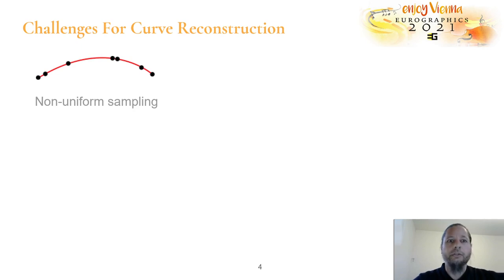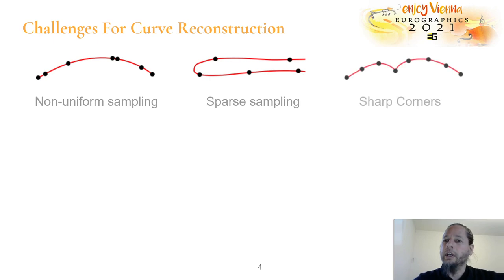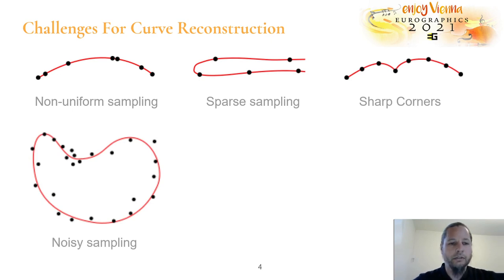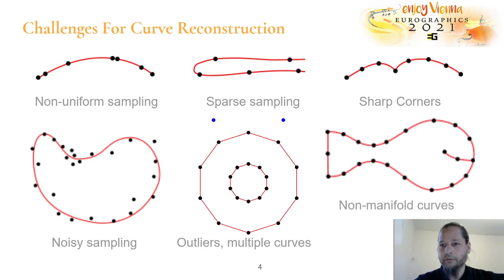What are the challenges for curve reconstruction? We have non-uniform sampling, meaning the distance between samples is very different. We may have sparse sampling — you can see here that points which are closer on opposing parts of the curve than on the curve itself — and sharp corners, as well as points which are not lying on the curve but perturbed by noise, multiple curves, outliers, or even curves which are not manifold, as you can see at the mouth of the fish here.